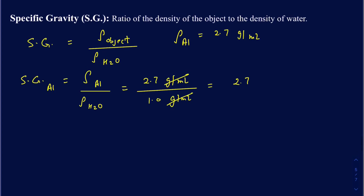This equivalence between specific gravity and the numerical value of density works when you use water's density as 1 gram per milliliter. If you use 1000 kilograms per meters cubed instead, the specific gravity value changes slightly. So keep in mind: when using grams per milliliter units, the specific gravity of an object equals the numerical value of its density.